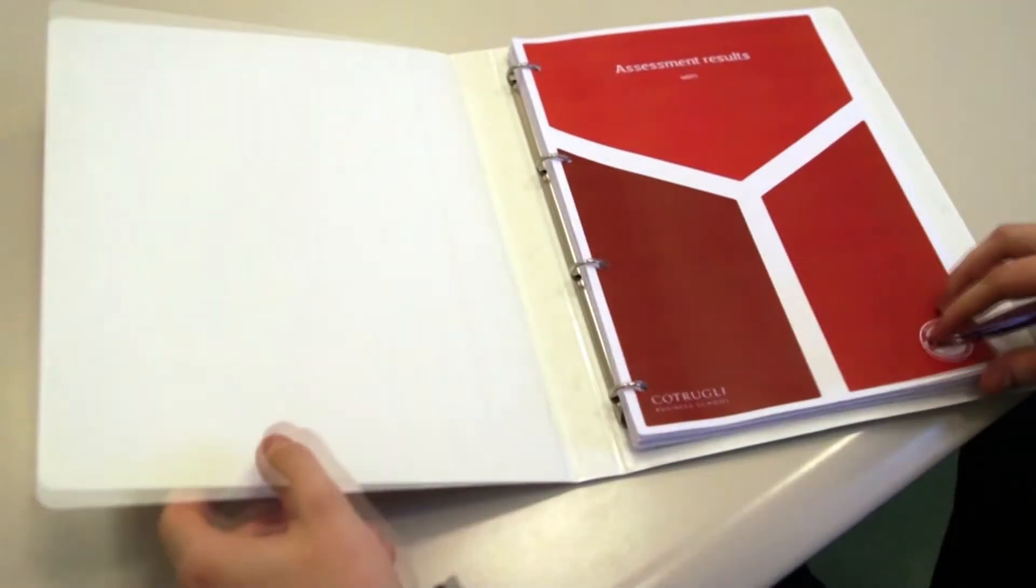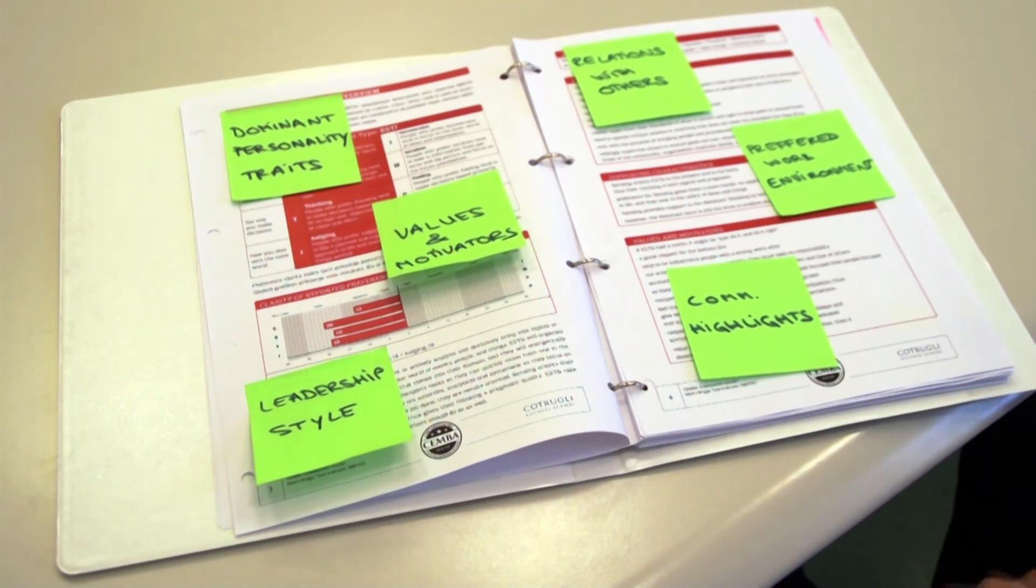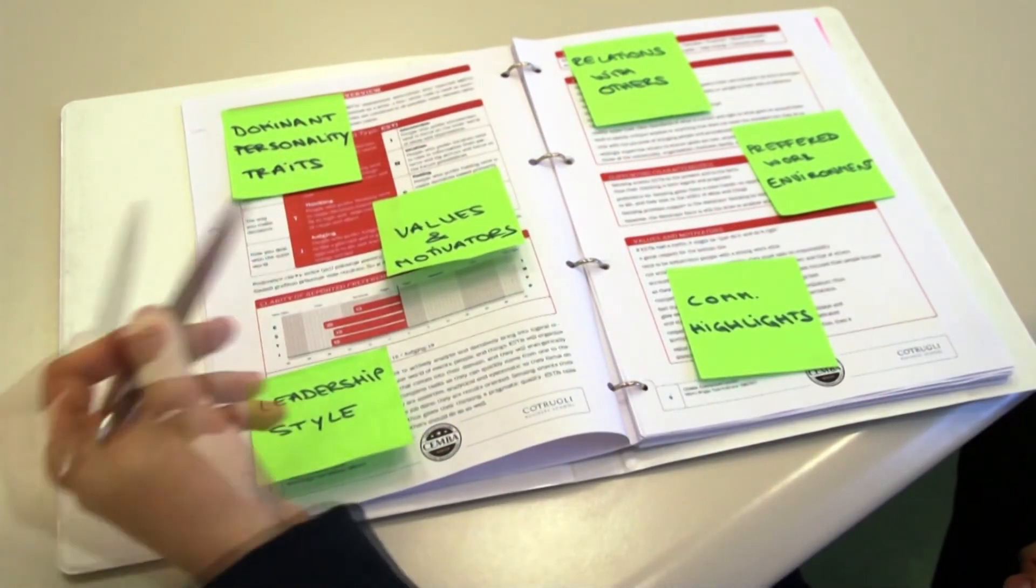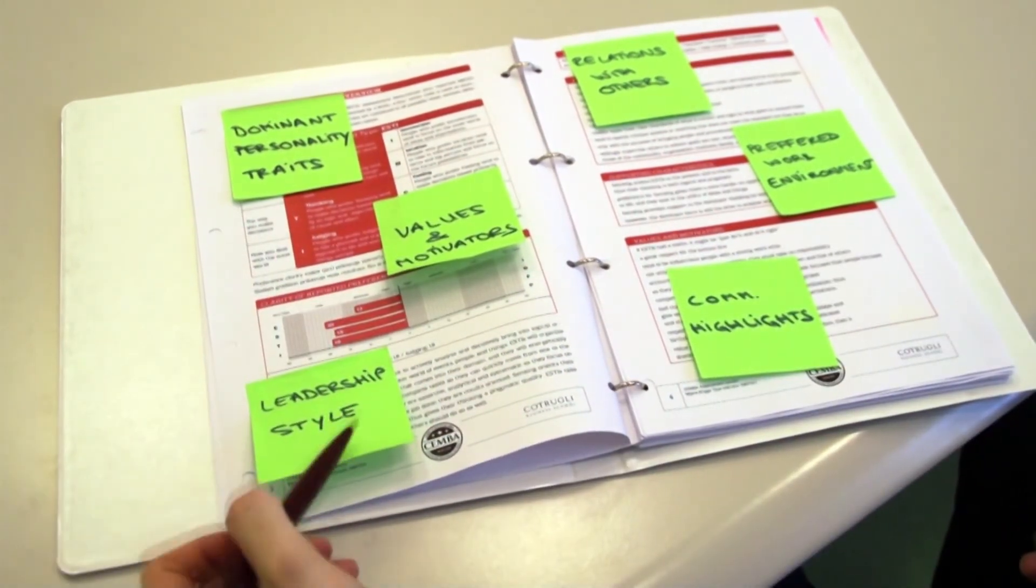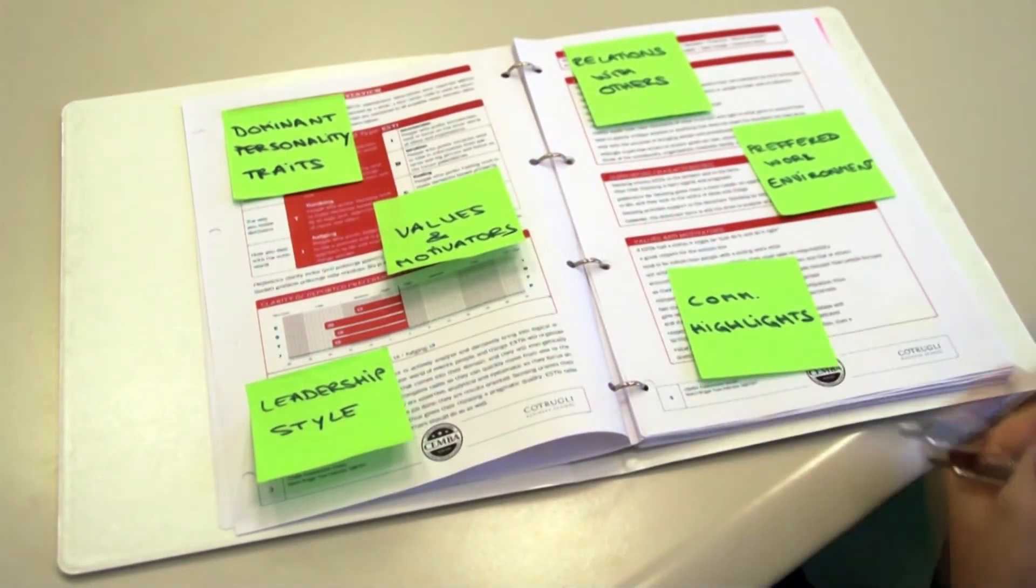Let's now take a look at how the report will look like. The first part is built around the MBTI indicator. It is based on your dominant personality traits, your values and motivators, your individual leadership style, how you relate with others, what is your preferred working environment and learning style, and what are the concrete communication highlights for your personality type.